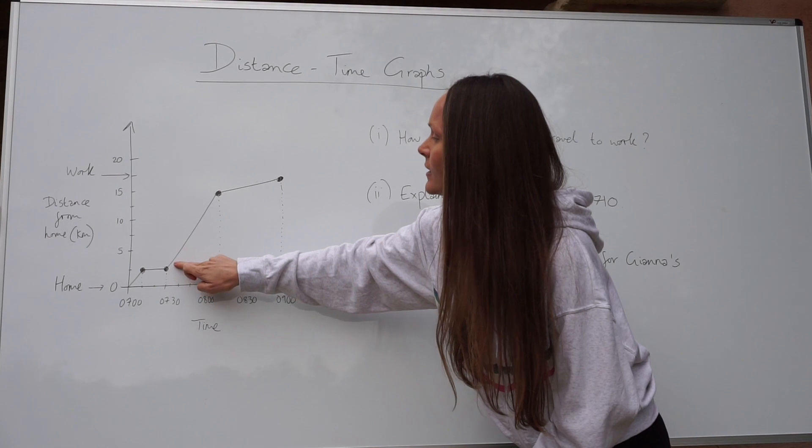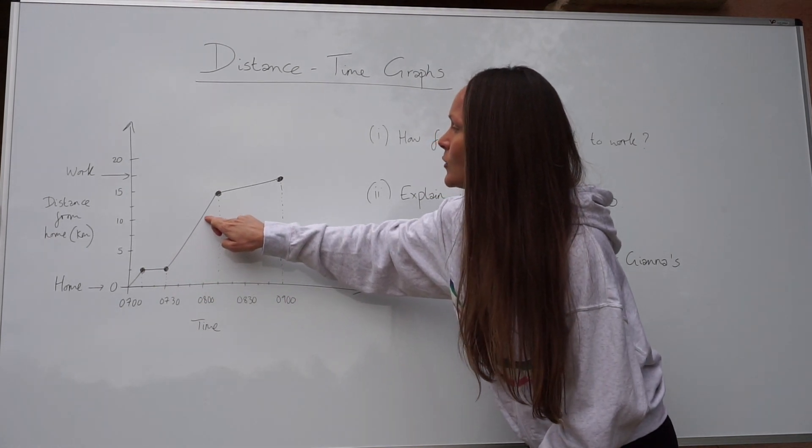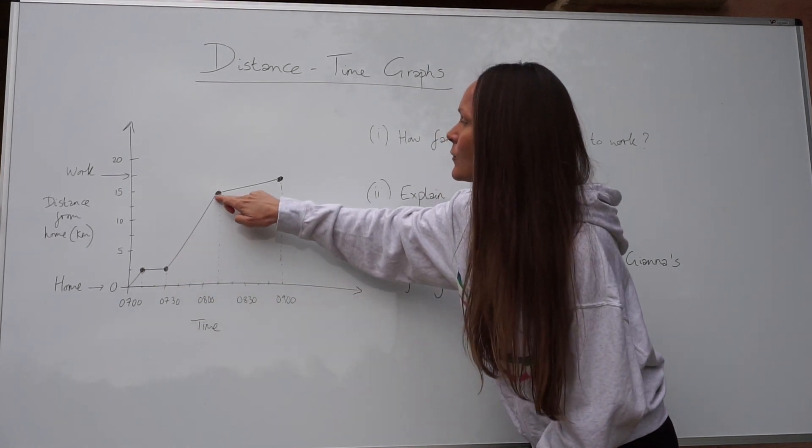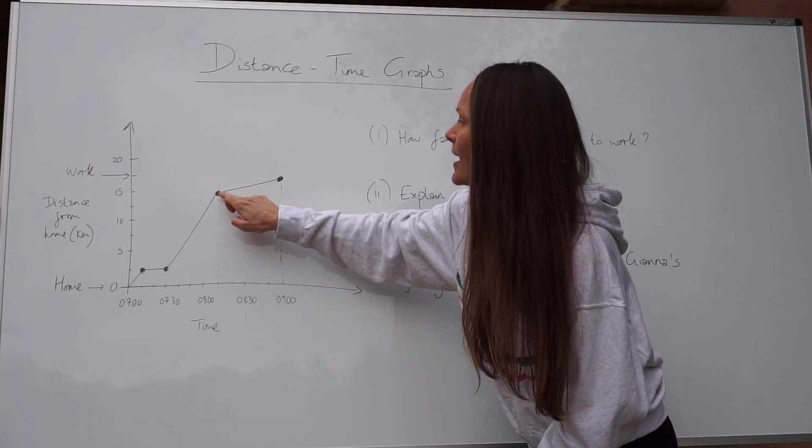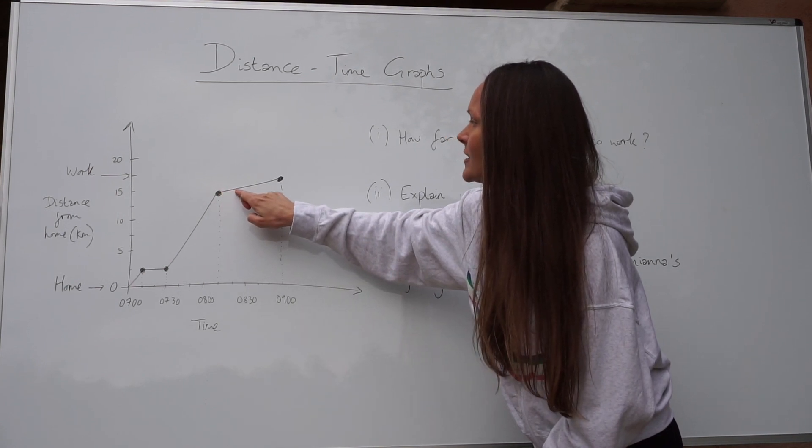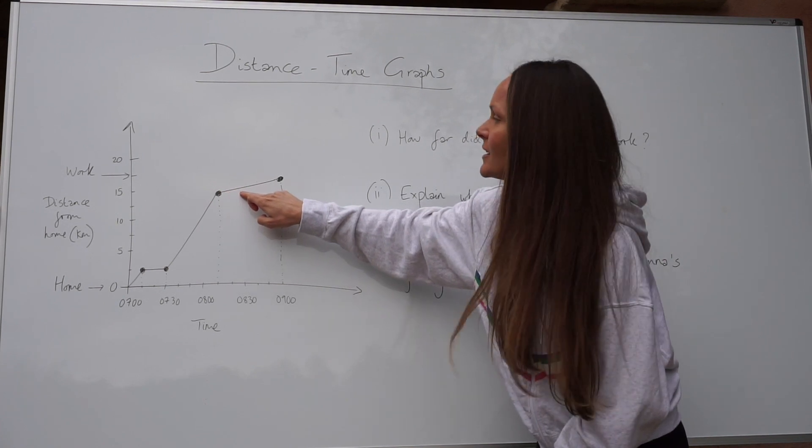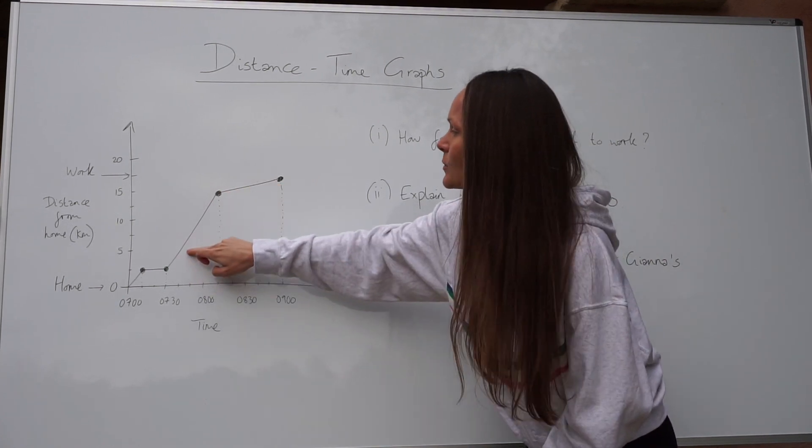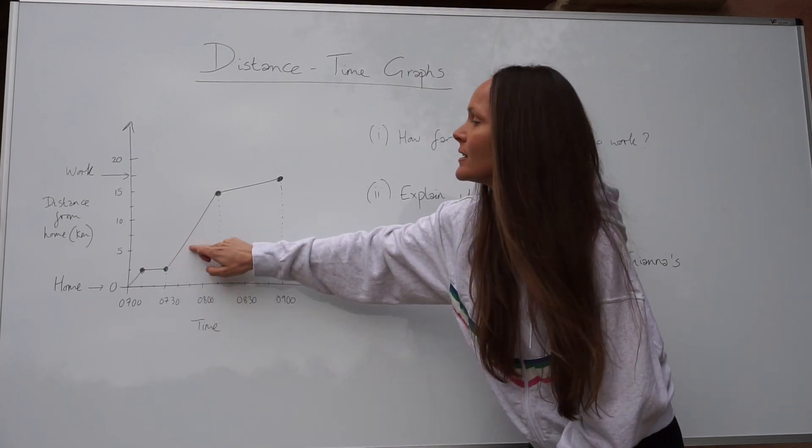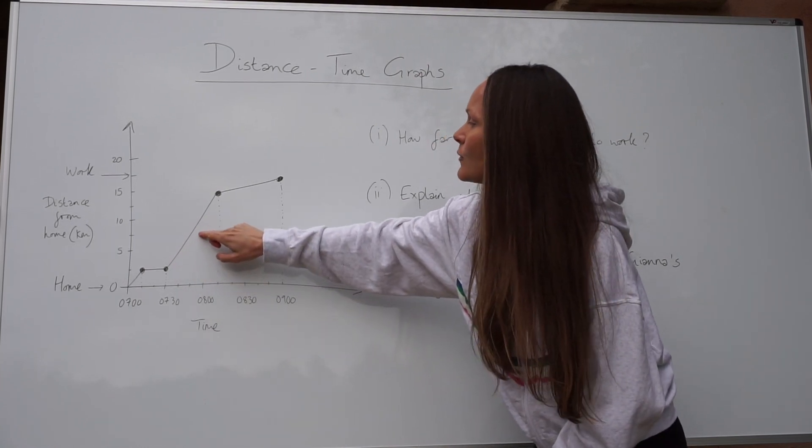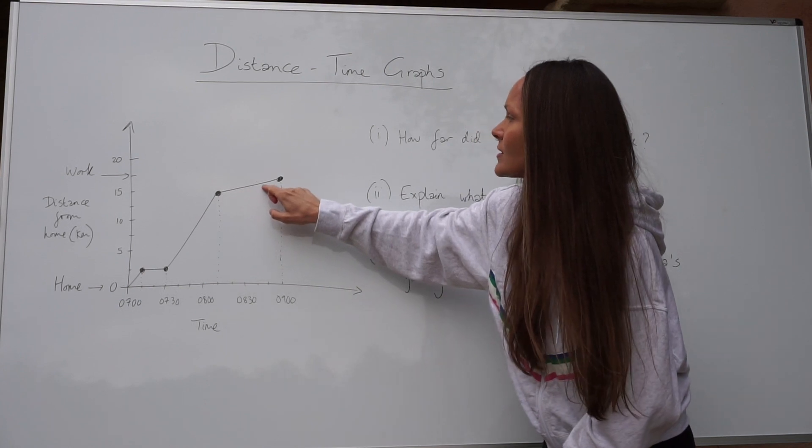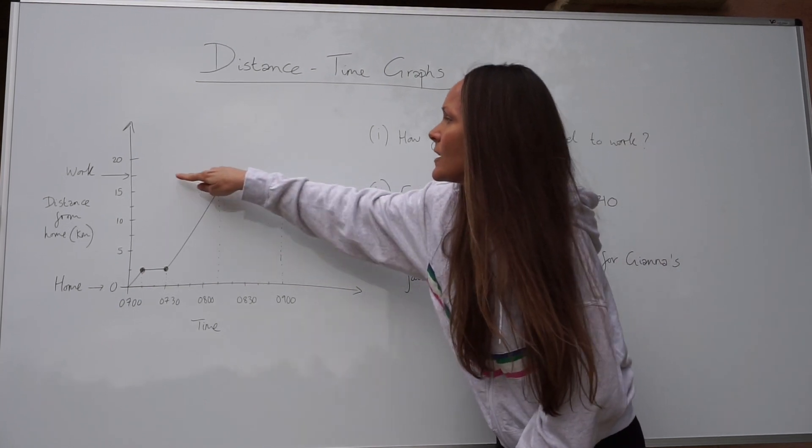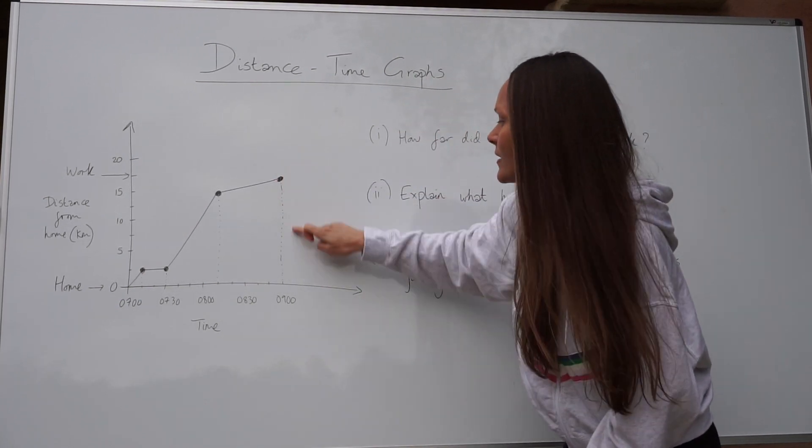Then she's traveling on her way to work again. You can see the distance is increasing from her home. And then, same again, the distance is still increasing, but at a slower rate. Can you see the gradient of this line is smaller than this one? So when you see a steep gradient, it means she's traveling faster and then she's traveling slower and then here she arrives at her workplace at nine o'clock.